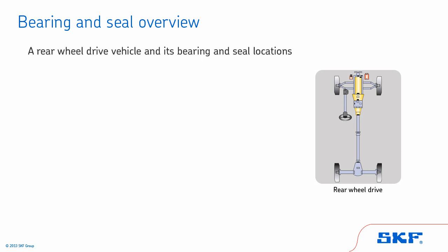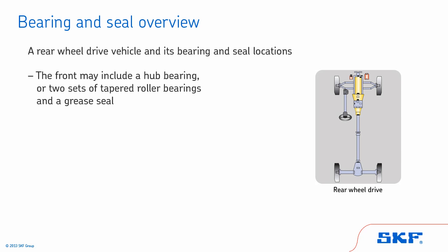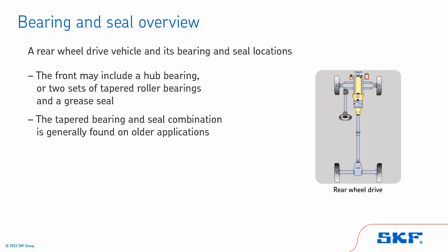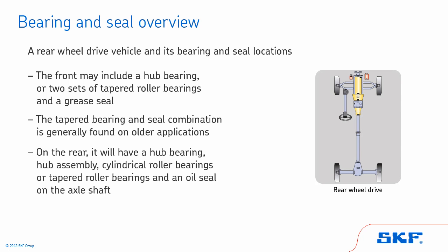This illustration shows a generic layout of a rear-wheel drive vehicle and its bearing and seal locations. This type of vehicle comes with a variety of wheel bearing and seal configurations. On the front, it may have a hub bearing or it may have two sets of tapered roller bearings and a grease seal — the tapered bearing and seal combination is generally found on older applications. On the rear, it will have either a hub bearing, hub assembly, cylindrical or tapered roller bearings, and an oil seal on the axle shaft.